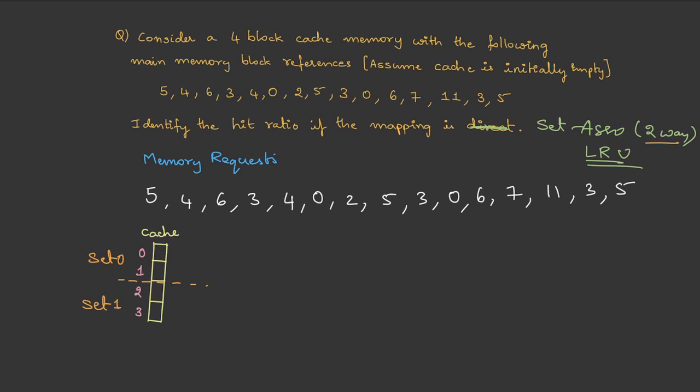We already know in set-associative mapping, set number follows direct mapping, so we can find set number as block number modulus number of sets. So this is block number mod two. Whenever you take a modulus of two, it segregates the numbers into two categories: one is even, other one is odd. So set zero will hold all the even numbers and set one will hold all the odd numbers.